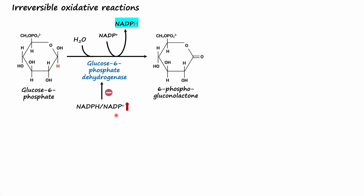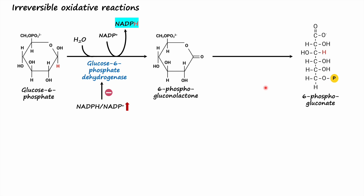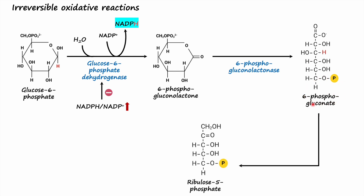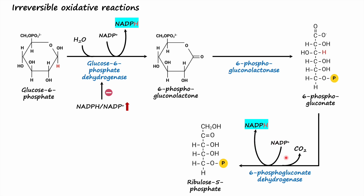Under most metabolic conditions, the ratio of NADPH to NADP+ is sufficiently high to substantially inhibit glucose 6-phosphate dehydrogenase, meaning cells already have enough NADPH. However, with increased demand for NADPH, the ratio of NADPH to NADP+ decreases, and the enzyme is activated to synthesize more NADPH. In step 2, 6-phosphogluconolactone undergoes spontaneous ring opening catalyzed by 6-phosphogluconolactonase to form 6-phosphogluconate. In step 3, the oxidative decarboxylation of 6-phosphogluconate by 6-phosphogluconate dehydrogenase synthesizes ribulose 5-phosphate, carbon dioxide, and a second molecule of NADPH. These three steps are the irreversible oxidative reactions of phase 1.